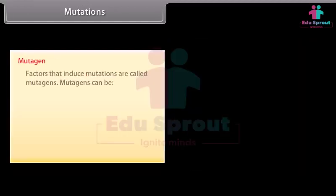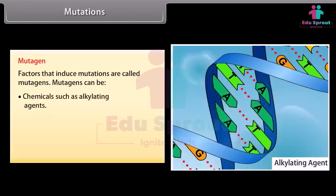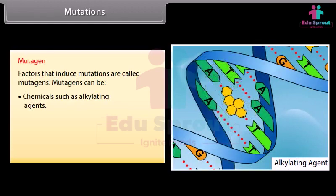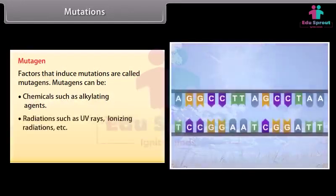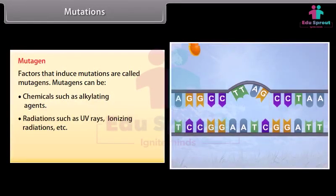Mutagen: factors that induce mutations are called mutagens. Mutagens can be chemicals such as alkylating agents, radiations such as UV rays, ionizing radiations, etc.